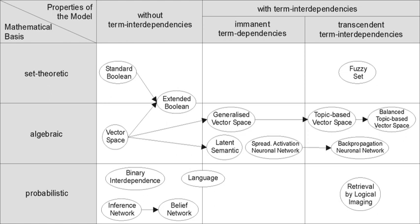An object is an entity that is represented by information in a content collection or database. User queries are matched against the database information. However, as opposed to classical SQL queries of a database, in information retrieval the results returned may or may not match the query, so results are typically ranked.